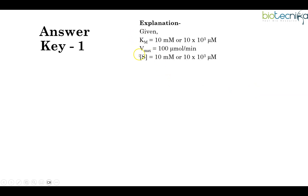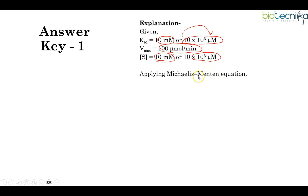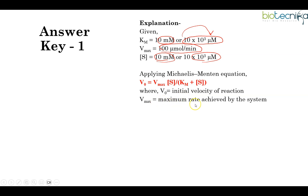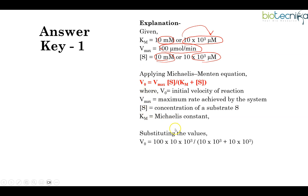For numerical questions, you must ensure that unit conversions are done properly. Km was in millimolar so it is brought to micromolar; Vmax was already given in micromolar; substrate was given in millimolar, so it is brought to 10³ micromolar. Using the Michaelis-Menten equation V0 = Vmax × S / (Km + S), substituting all values gives the answer: 50 micromolar per minute.